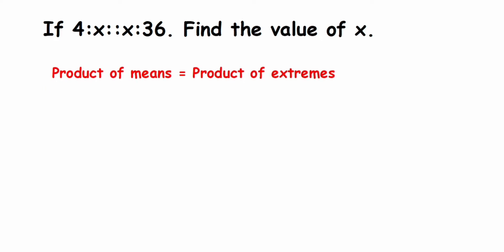Mean means the ones which you see at the center. So here x and x are mean. And the ones which you see at the end, that is 4 and 36, are at the end of this given proportion. They are called extremes. So the ones which are at the corners are called extremes, the ones which are at the center are called mean. So x and x are mean, 4 and 36 are extremes.